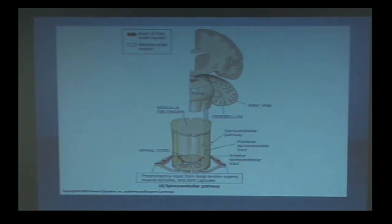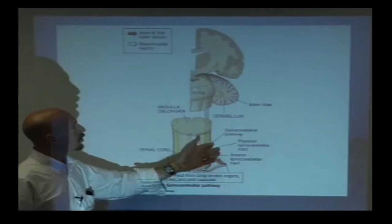Spinocerebellar tracts are one of the big inputs. Vestibular-cerebellar tracts are one of the other big ones. They provide information up, and the cool thing about the spinocerebellar pathways is they've got a double copy.